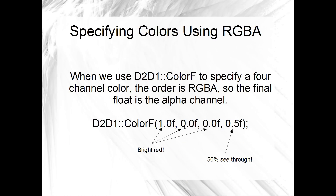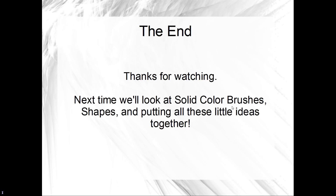Finally, if you want to specify an alpha channel in your ColorF, all you want to do is supply a fourth argument. The first three arguments are RGB in that order, and the fourth argument, if you supply it, is the alpha channel. If you don't supply a fourth argument to ColorF, the alpha channel just defaults to 1.0, or 100% opaque. So this particular example just here would be bright red with 50% transparency. We'll have a look at this in practice with all of this stuff once we've looked at solid color brushes and shapes, which I think we'll do next time. Thanks for watching, see ya.